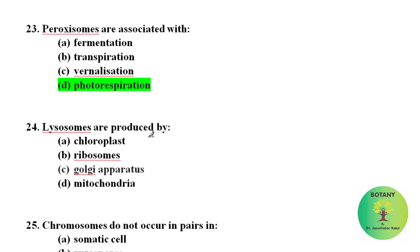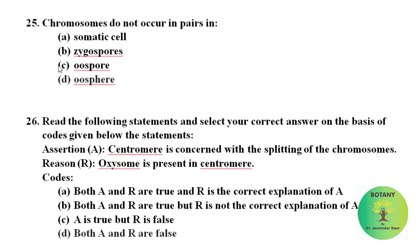Lysosomes are produced by the Golgi apparatus. Chromosomes do not occur in pairs in oosphere. Oosphere is a non-motile female gamete formed in the oogonium of an alga, fungus, oomycete, or a bryophyte. As it is formed after meiosis, hence it contains unpaired chromosomes.